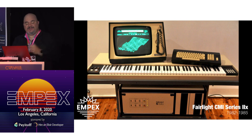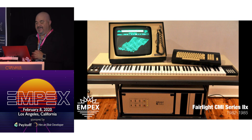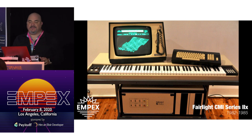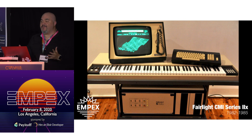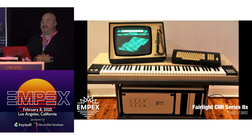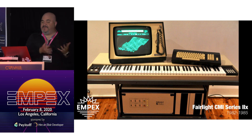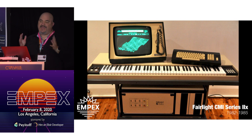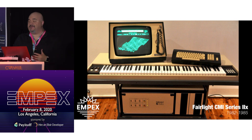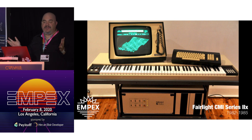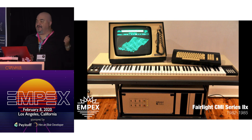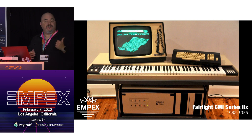This right here is called the Fairlight CMI Series 2X. It was built between 1982 and 1985. When it came out it was about 30,000 pounds, and an article I read says it was used on nearly every album released in the early to mid-1980s. It was a workhorse — an 8-bit sampler, basically. You'd feed sound in, it would sample it, and play it back. It had a very distinct sound, and if you've listened to music in the past 40 years, you've heard sounds from it. There are orchestra hits still being used today.